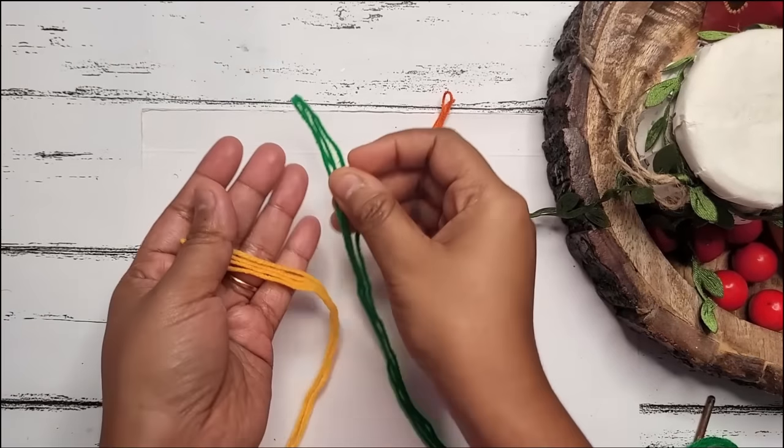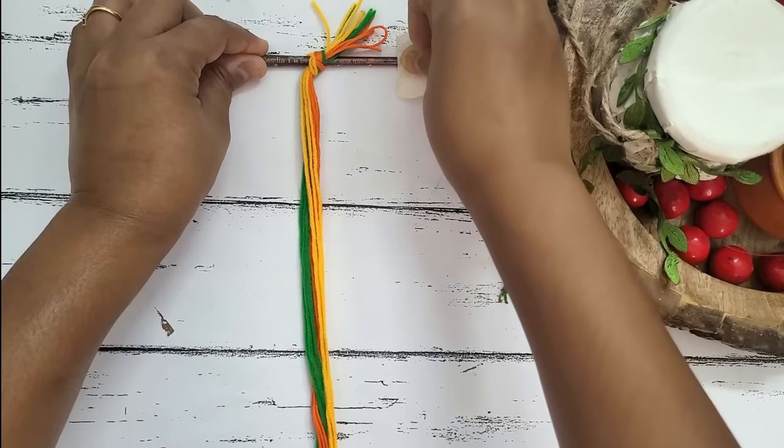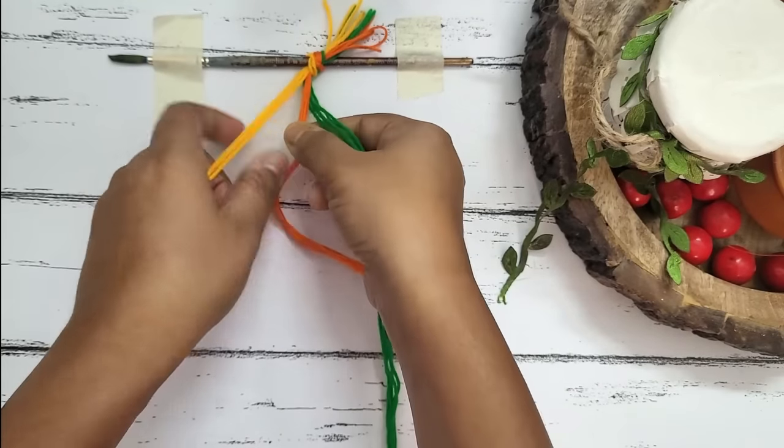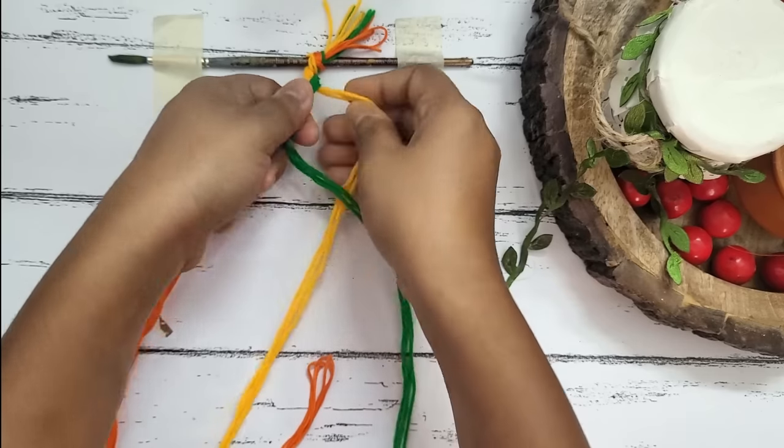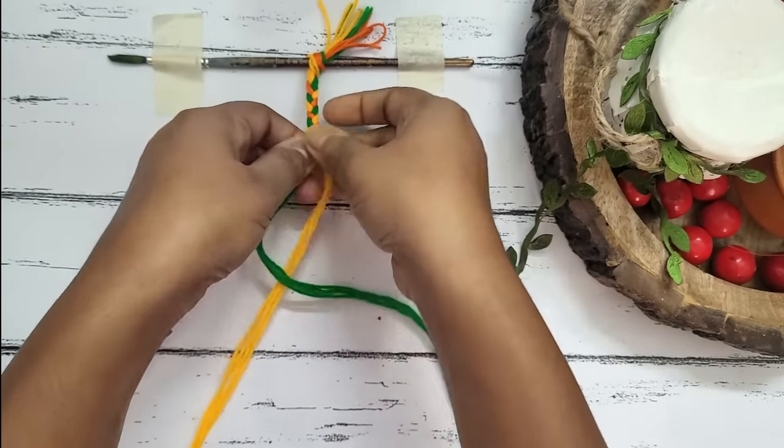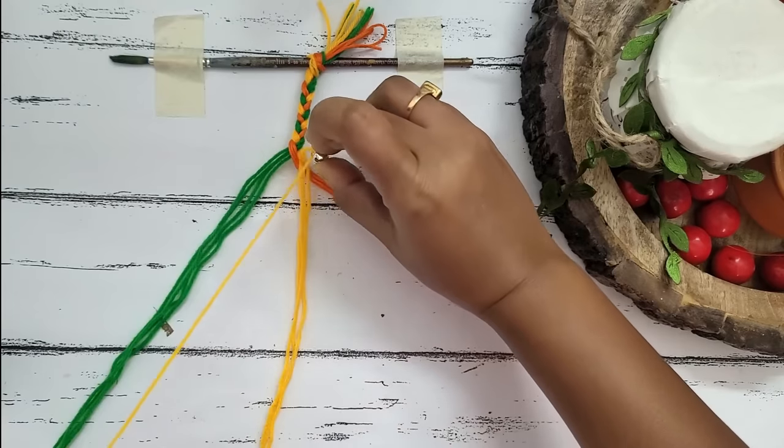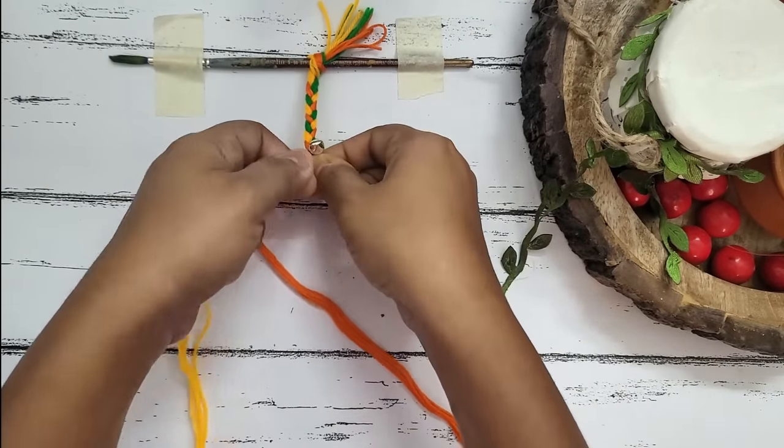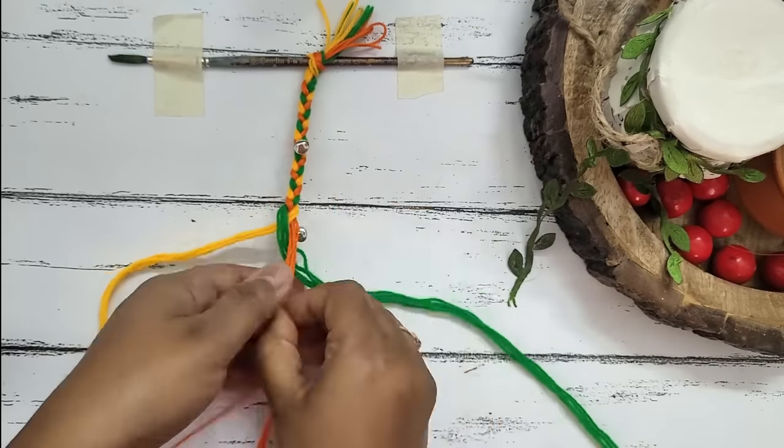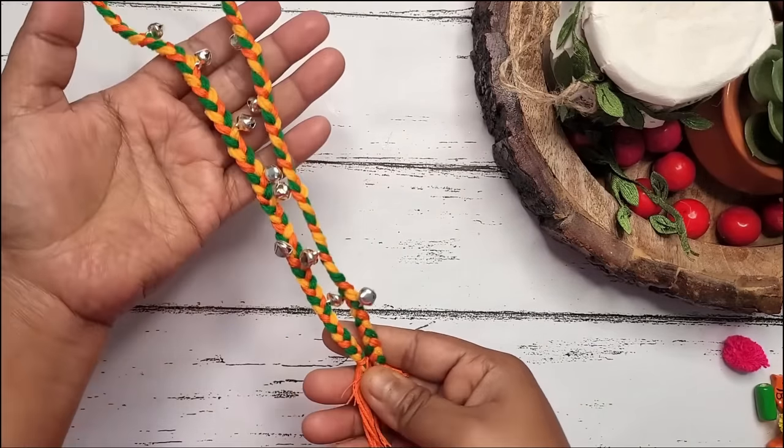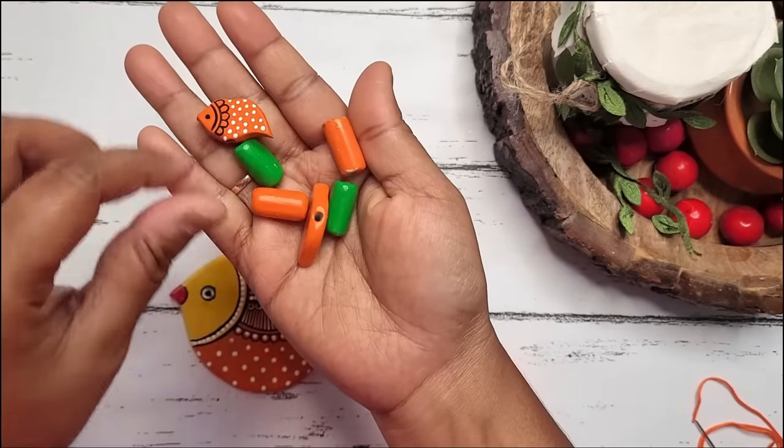Here I've taken four strands of three different colors of woolen thread, using a brush and masking tape to hold them in one place, and then I'll start making braid out of it. Here I'm adding some gungru charms maintaining equal distance on the dory part. This will obviously give the dory a funky look, and who doesn't like the sound of charms? We are done with the dory.